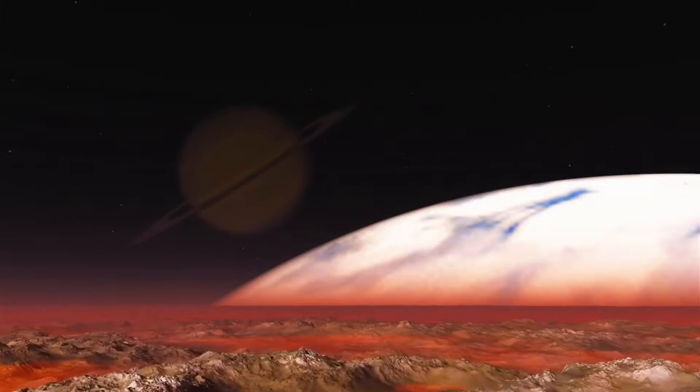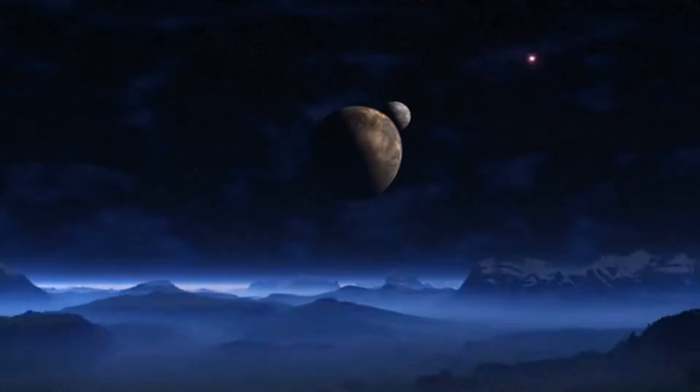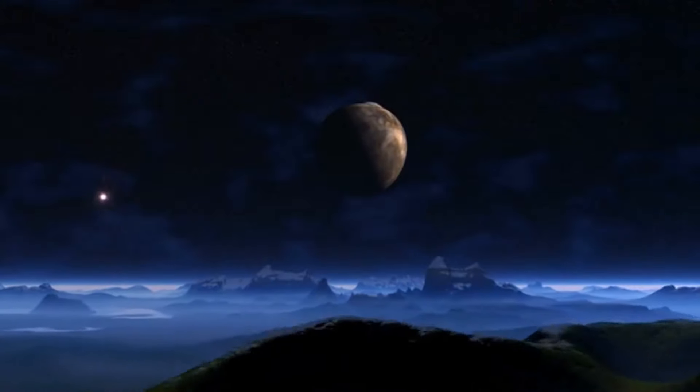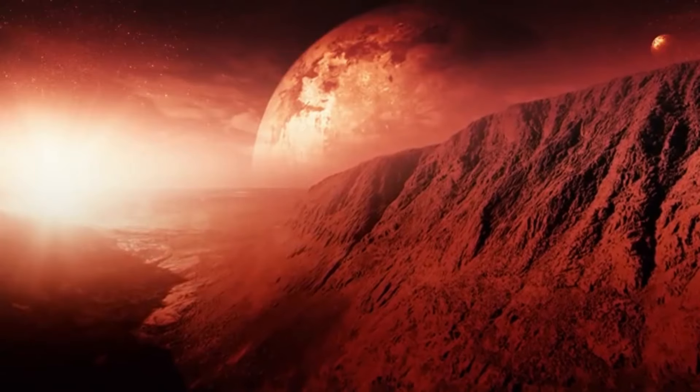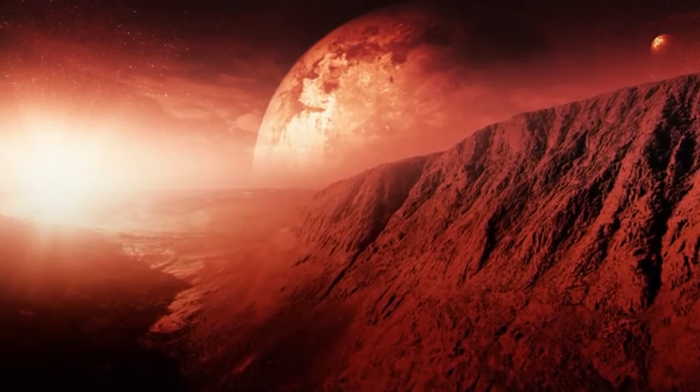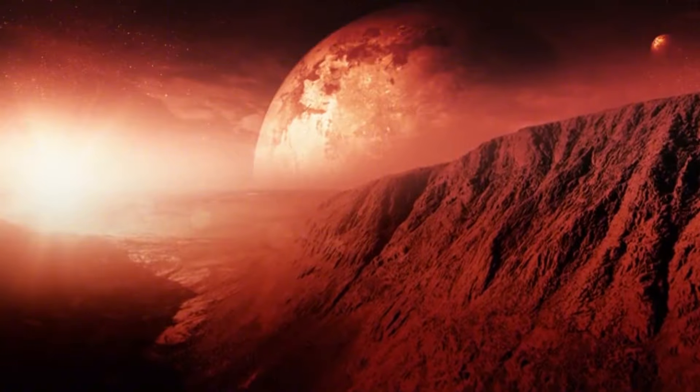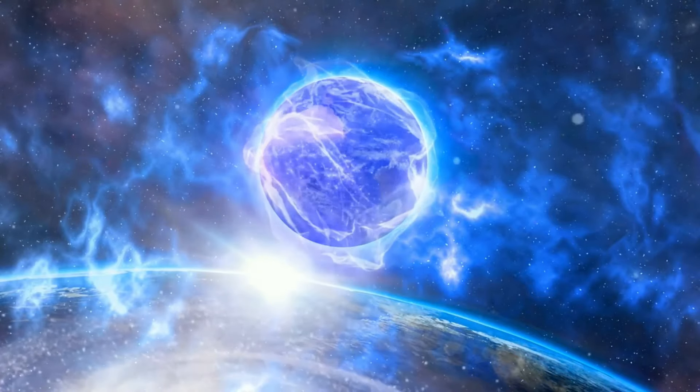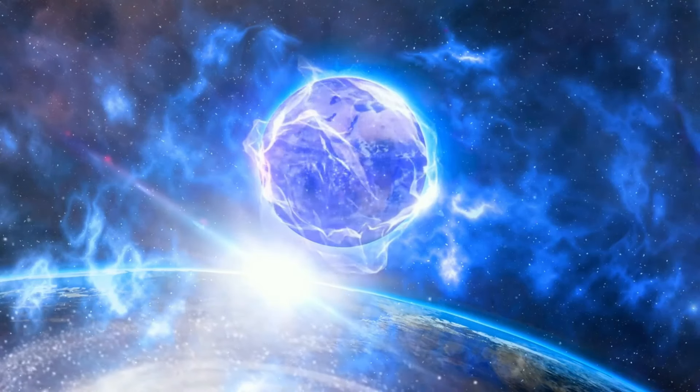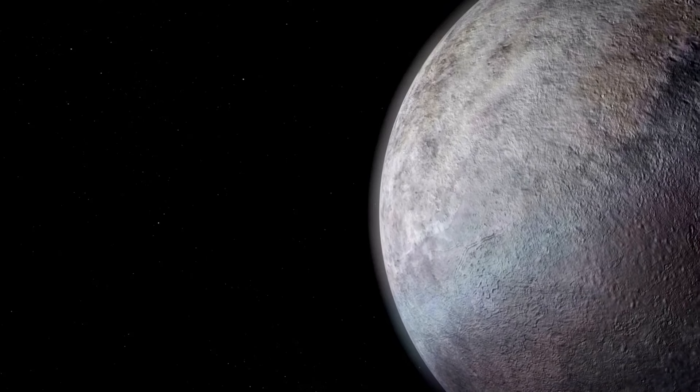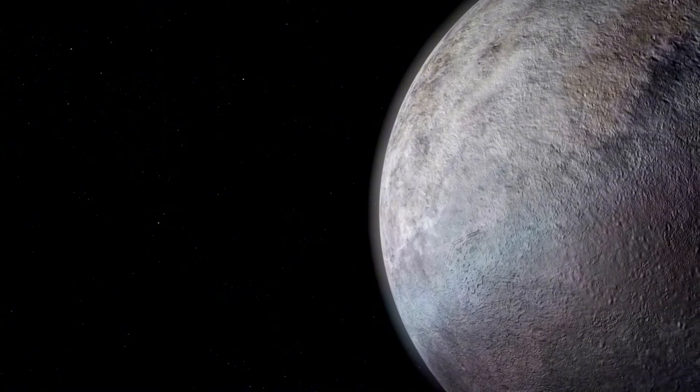The New Horizons mission, which flew by Pluto in July 2015, provided remarkable data about this distant world. The outer layer of Pluto is characterized by vast plains, towering mountains, and deep valleys. One of the most striking features is the Sputnik Planitia, a massive heart-shaped plain primarily composed of nitrogen ice. This region showcases a diverse array of landforms, including immense ice shelves and what appear to be flowing glaciers. The presence of these features indicates that Pluto could still be geologically active, despite its vast distance from the sun and low temperatures.